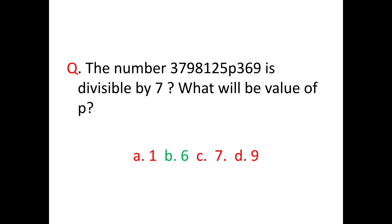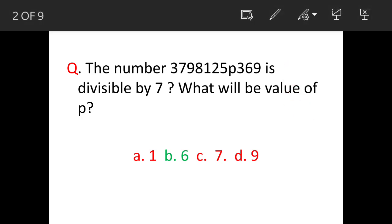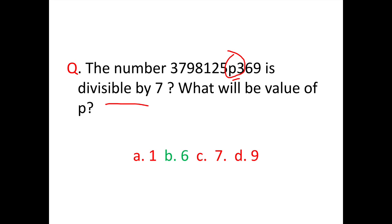The question is: there is a digit given 3798125p369 and this digit is divisible by 7. So what is the value of this p, this small number p? The options are given and option b, 6, is the answer. So we will see how.